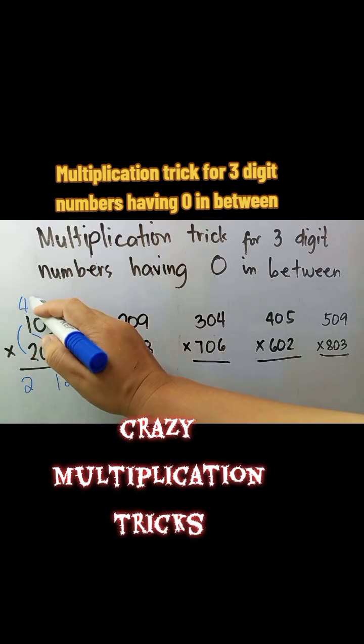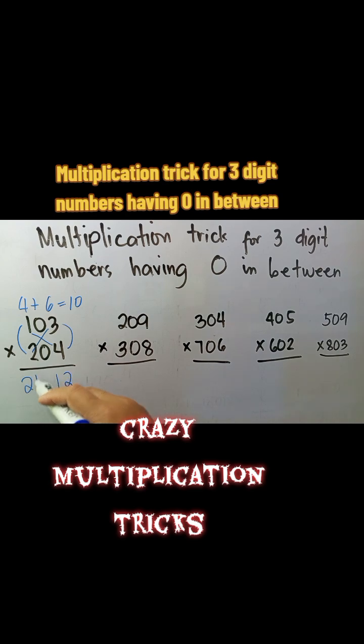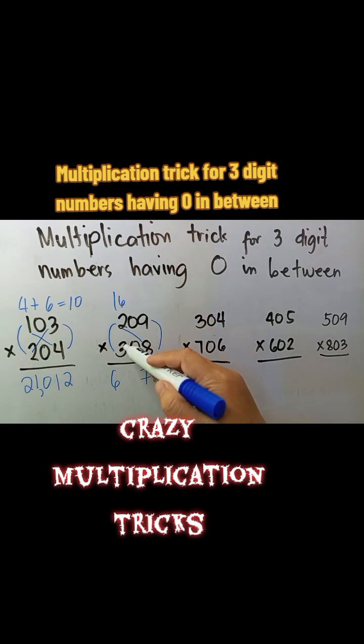In multiplying three-digit numbers having zero in between, we first multiply the third digits, followed by multiplying the first digit. Note that you can also multiply the first and then the third digits. But make sure that you give space for the numbers in between the result of the first and the third digits to complete the answer.